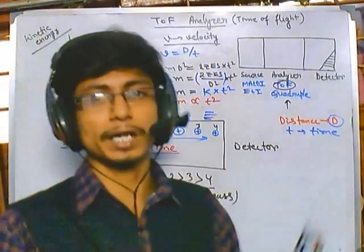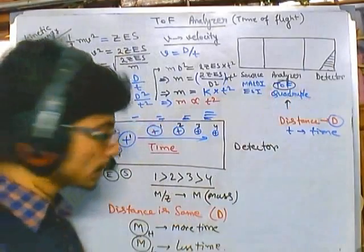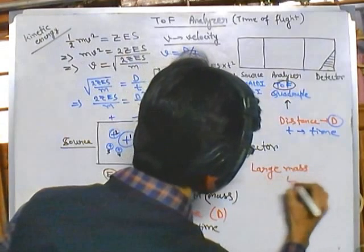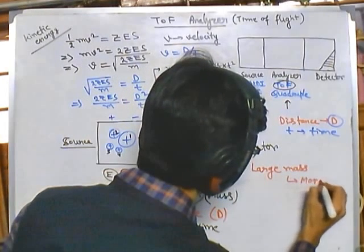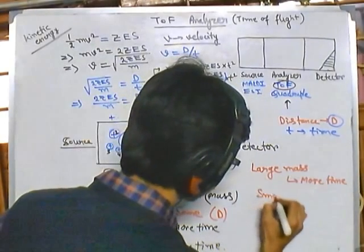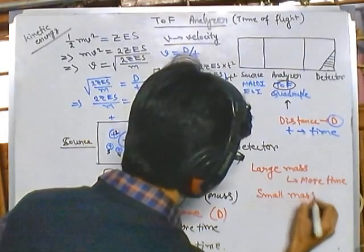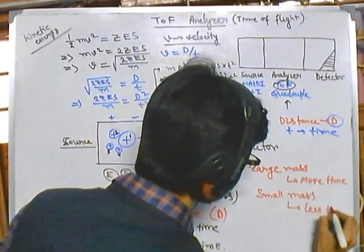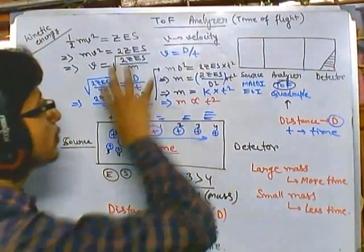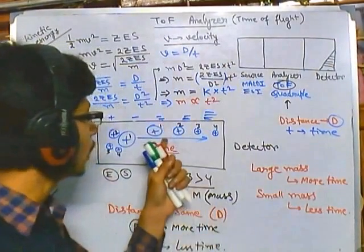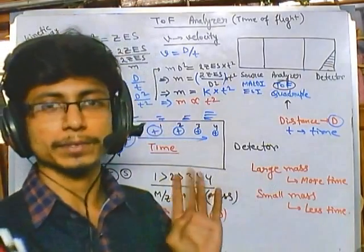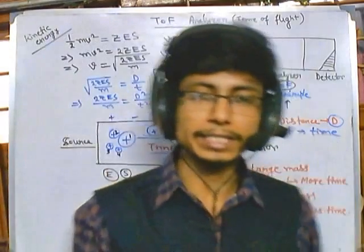The conclusion is: large mass → more time to reach the detector; small mass → less time to reach the detector. We rely on basic physics and the kinetic energy of charged molecules to separate them depending upon time — that's what Time of Flight means. Thank you.